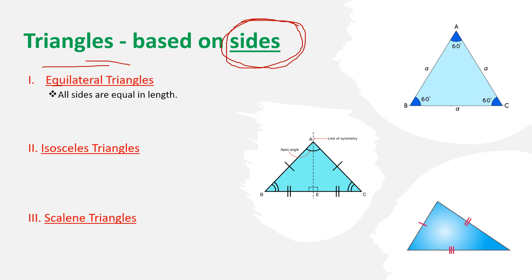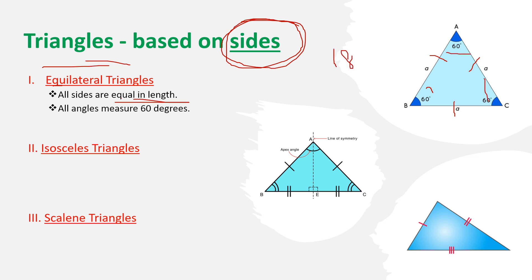What is equilateral? 'Equi' means equal and 'lateral' means sides. So if all sides are equal in length, we call it an equilateral triangle. Since all sides are equal, all angles are also equal. Since total angles sum to 180 degrees and all are equal, each angle is 60 degrees. This classification is based on the length of the sides — for example, 2m, 2m, 2m.